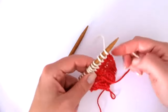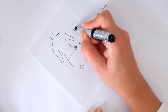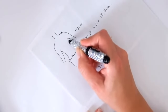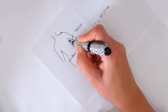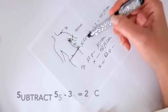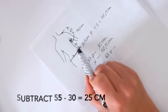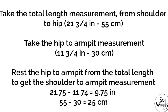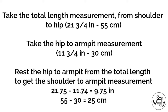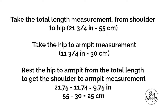Repeat these six rows until the work measures the distance from the hip to the armpit. Now we are going to need three different measurements. First, the total length — measure from shoulder to hip. In my case it's 55 centimeters. Now take the measurement from hip to armpit — in my case this is 30 centimeters. And now we need to know the measurement from shoulder to armpit: 55 minus 30 equals 25. So now I know that I have to work 30 centimeters in stockinette stitch doing the stripes, and then I'm going to start working the drop shoulder sleeves.